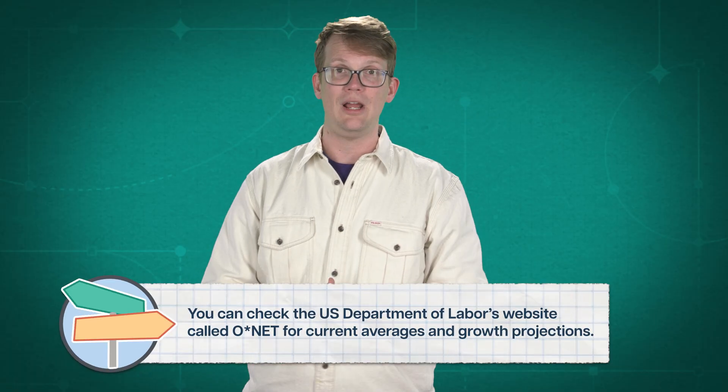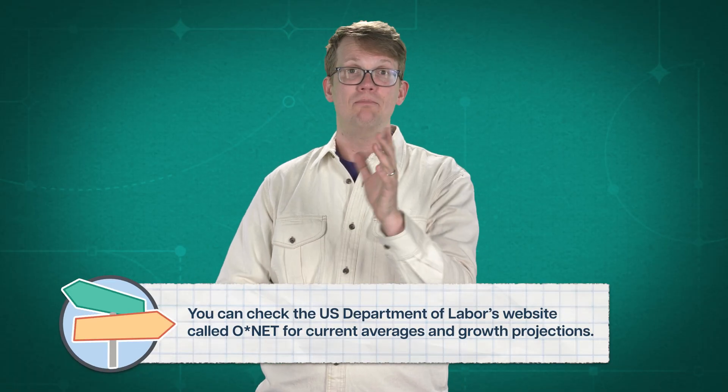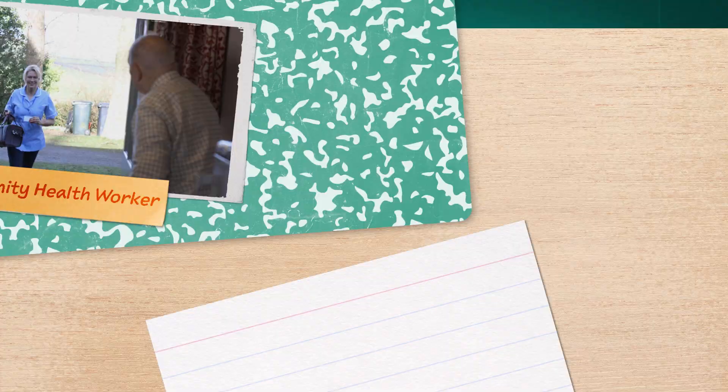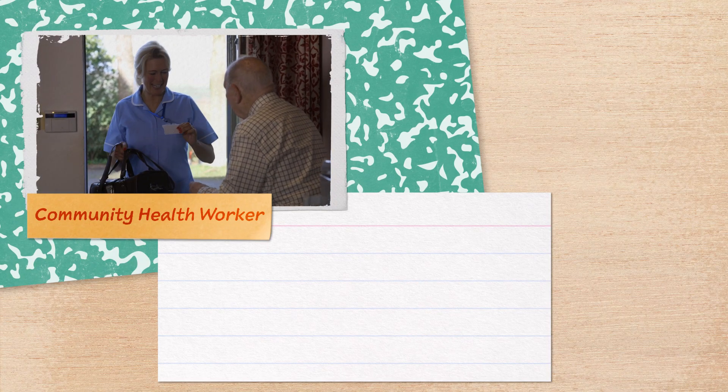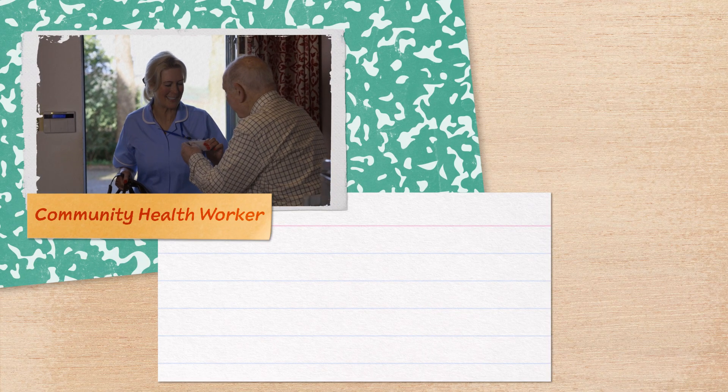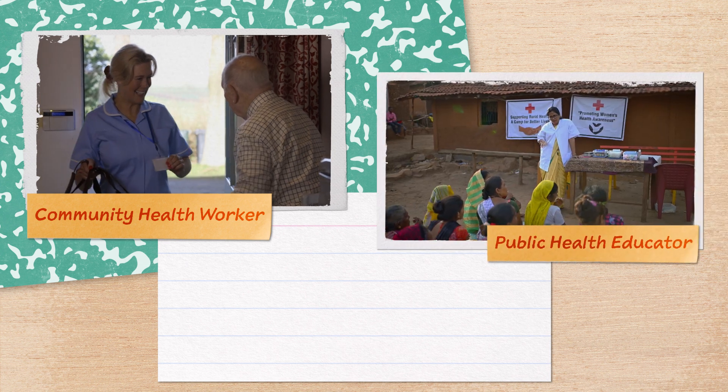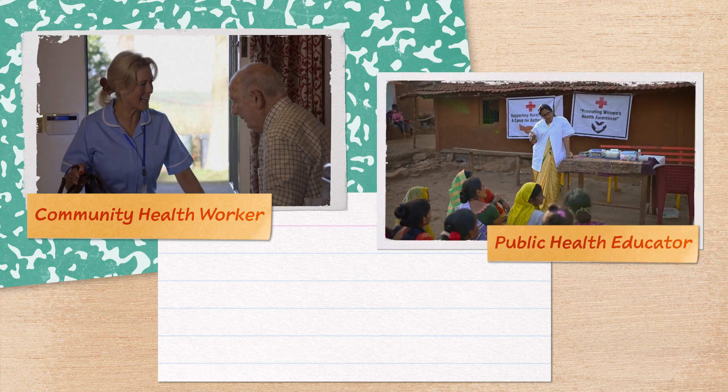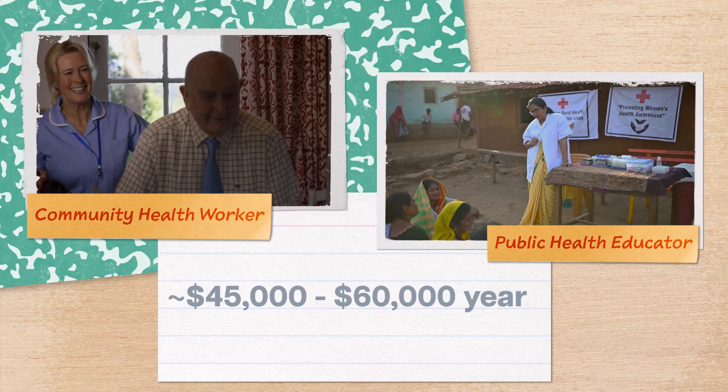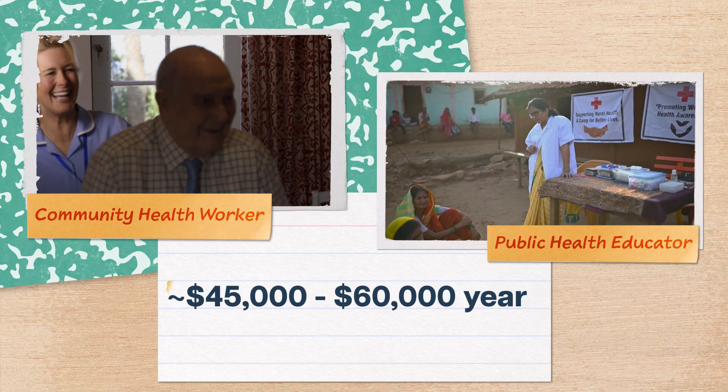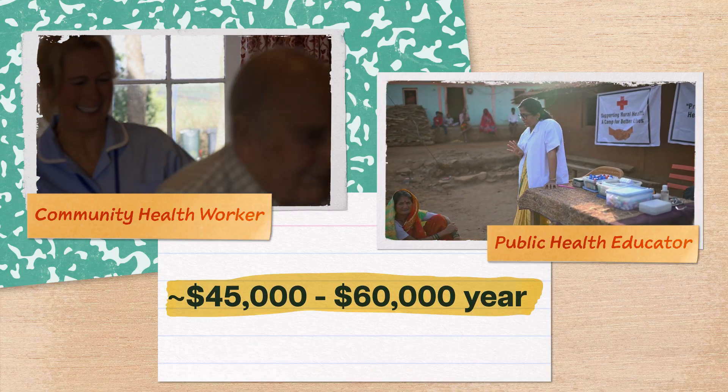But if you do decide a public health degree is for you, there are tons of post-grad paths that you can follow in both the public and private sector. Right out of undergrad, you could become a community health worker, reaching out to communities to provide the health resources they need, or a public health educator, working to teach people about health initiatives and encouraging them to make positive health choices. Both of these jobs can make you somewhere between $45,000 and $60,000 annually.